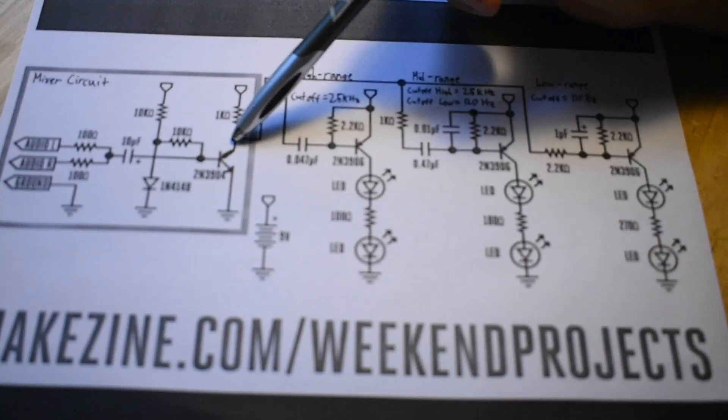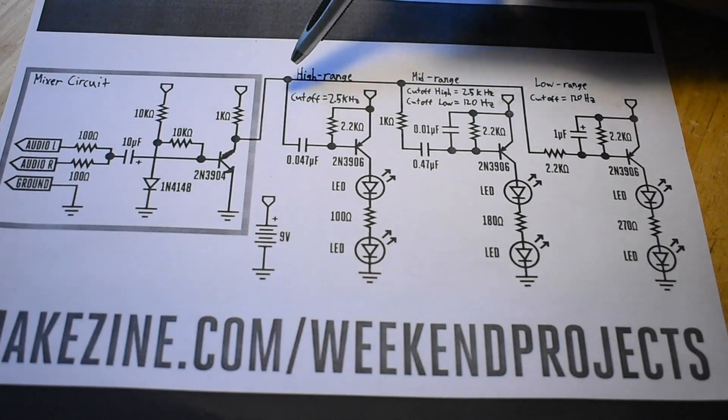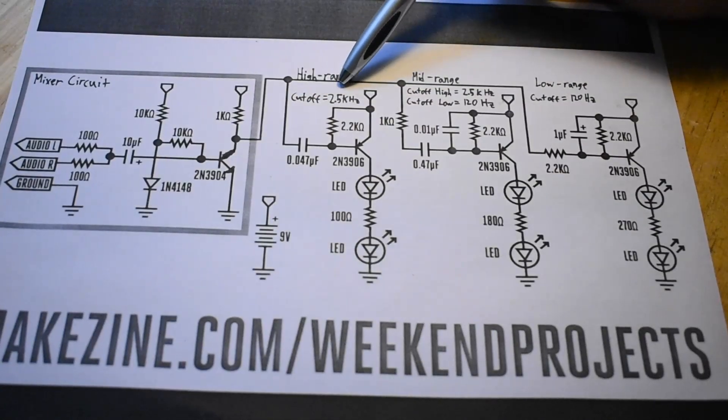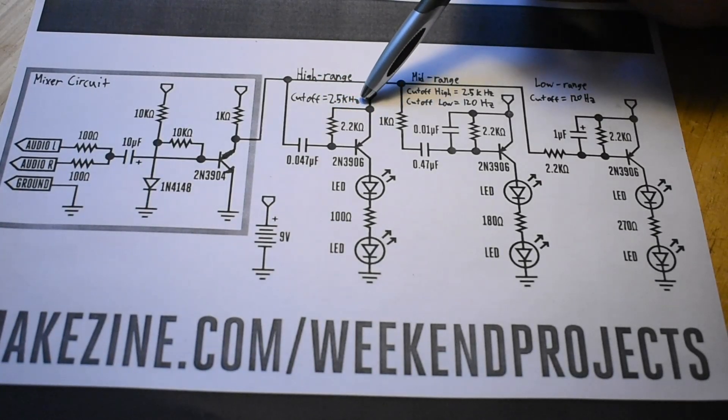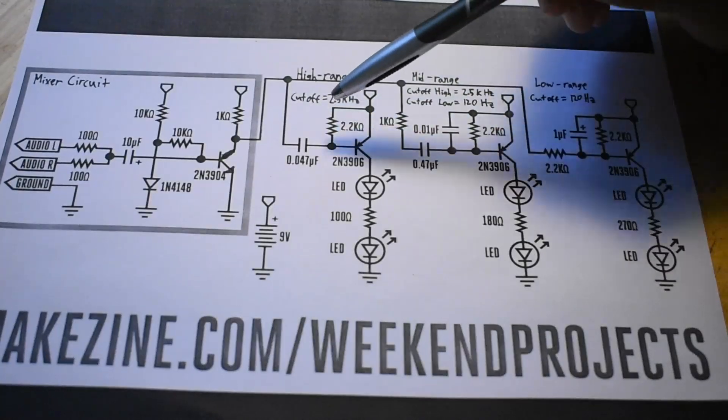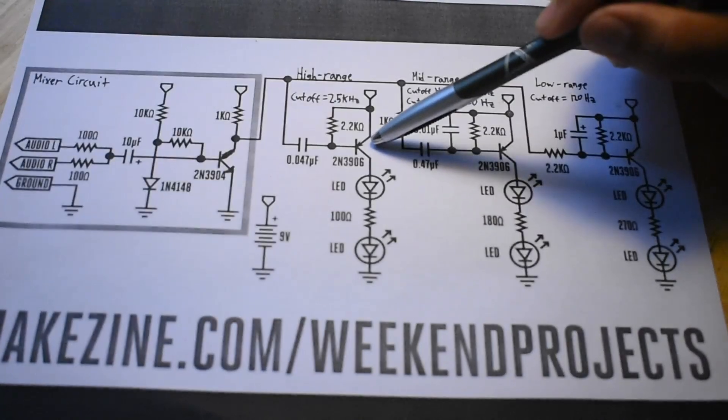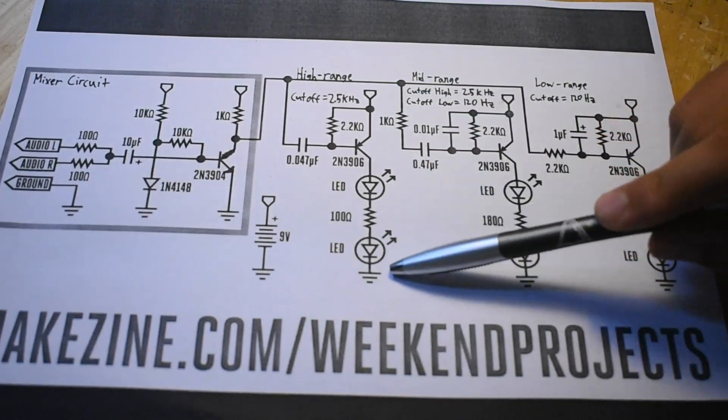If the amplified signal is fed to the high range filter, for example, only frequencies above the cutoff, which is 2.5 kHz, are allowed to pass, allowing to turn on the 2N3906, which then turns on the LEDs.